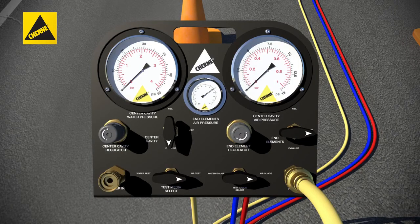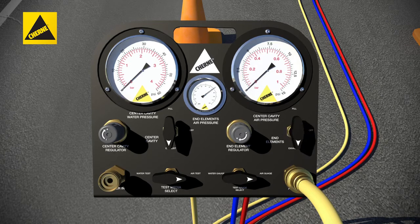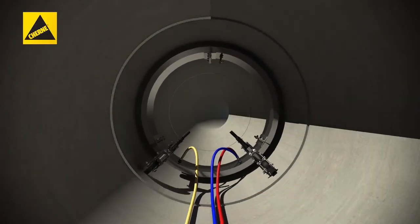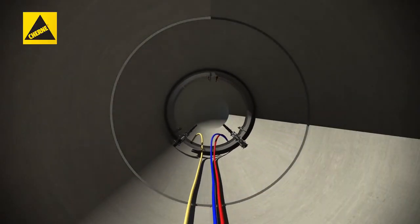Relieve the test pressure, deflate the end elements. When the end element pressure gauge reads zero, disconnect the air hose and roll the joint tester to the next joint to be tested.